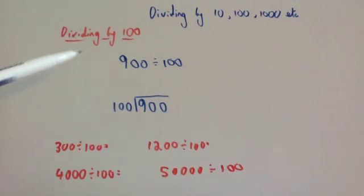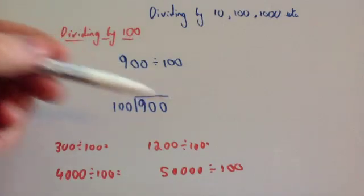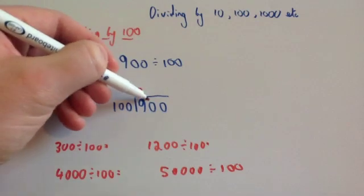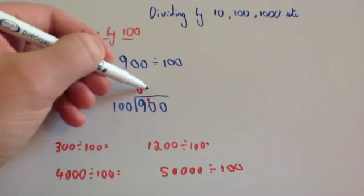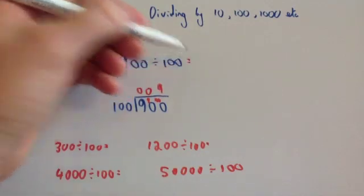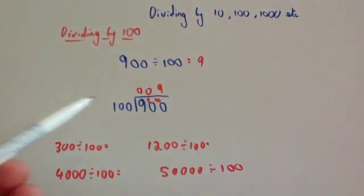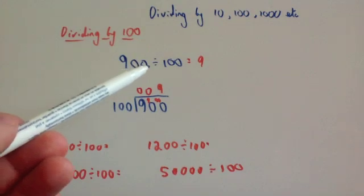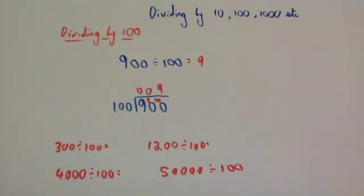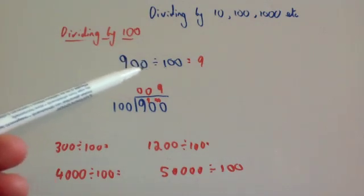So we're now going to look at dividing by 100. So if you had 900 divided by 100, let's try short division. 100 into 9 doesn't go, remainder 9. 100 into 90 doesn't go, remainder 90. And then 100 into 900 goes 9 times. So 900 divided by 100 is 9. Notice that we have just taken off two zeros from the 900. So whenever you divide by 100, you take off two zeros. You made it 100 times smaller, so we've taken off two zeros.